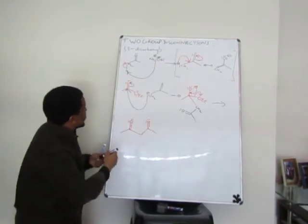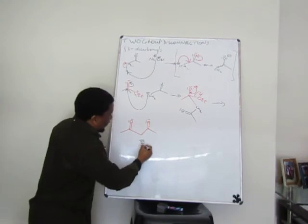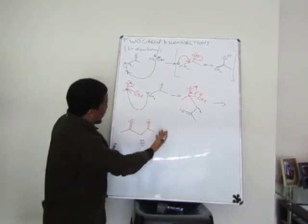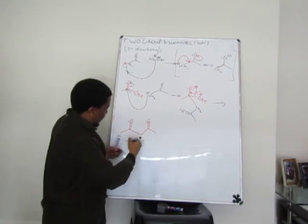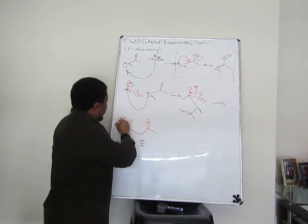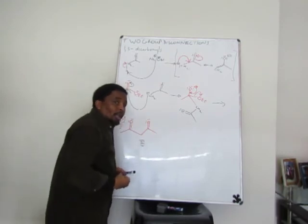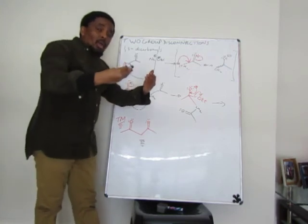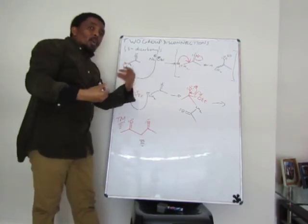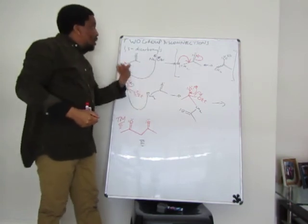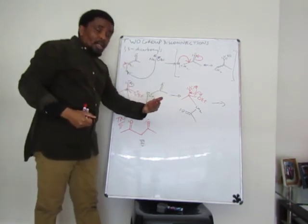That will add with H plus to give us ethanol. But this is my 1,3-dicarbonyl, which in this case is my target molecule. So you have seen now what we mean by one group disconnections, what we mean by two group disconnections.